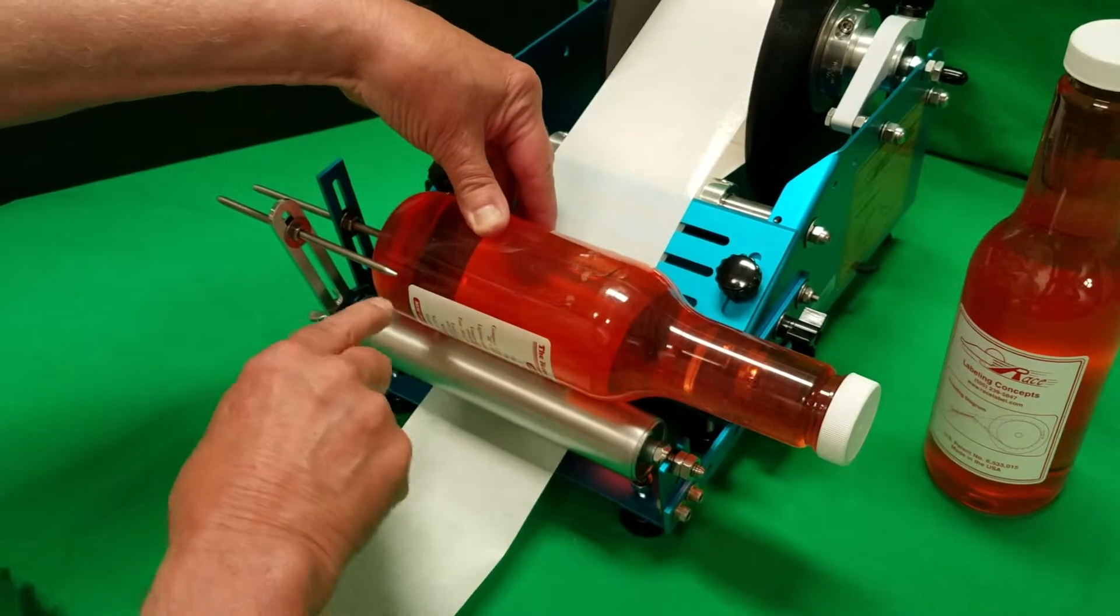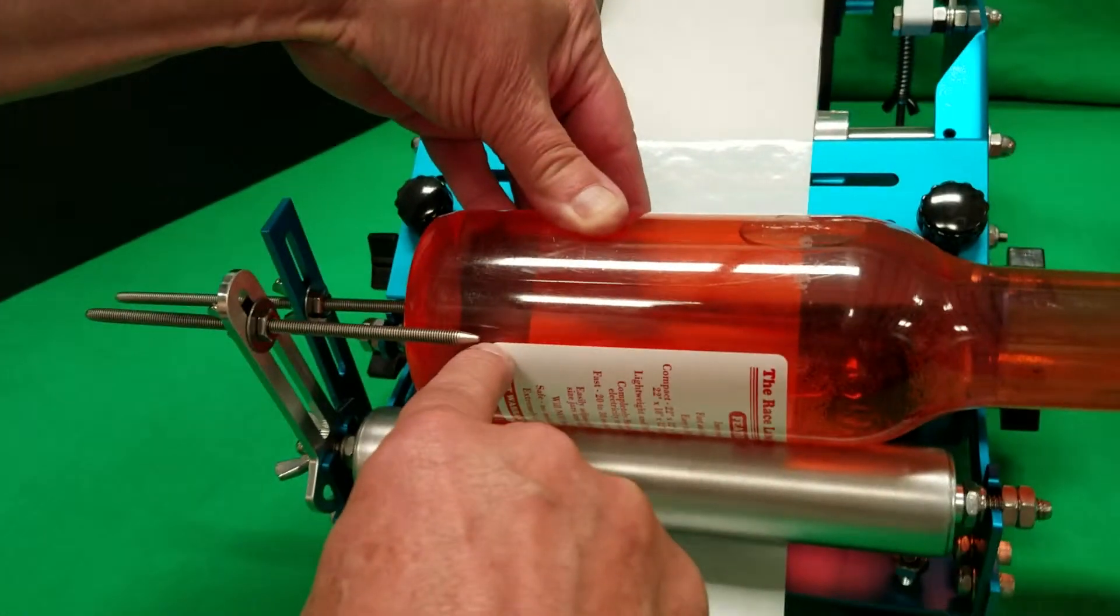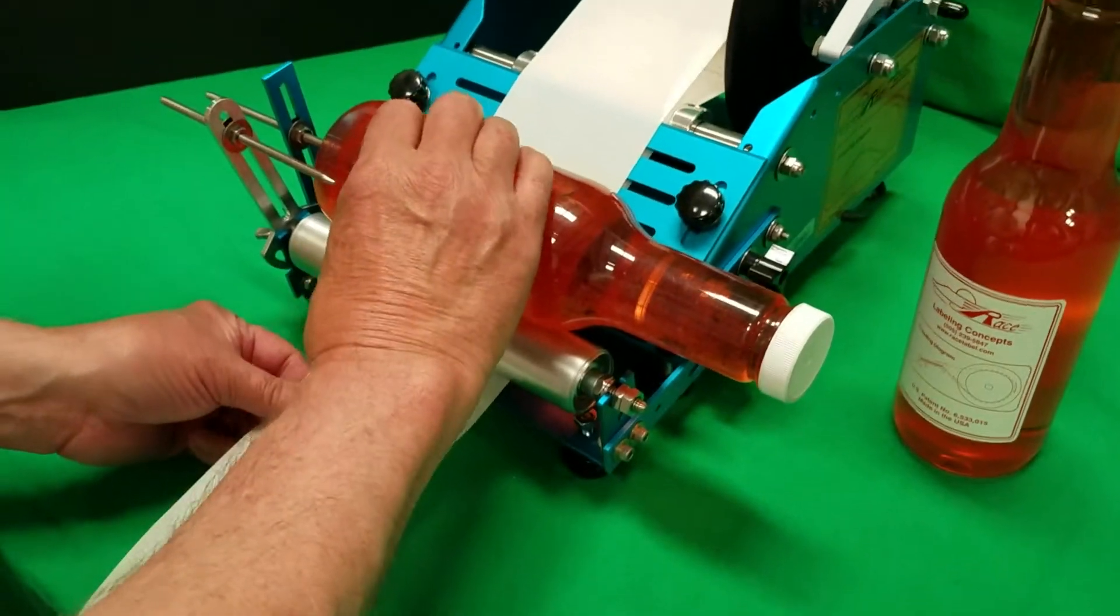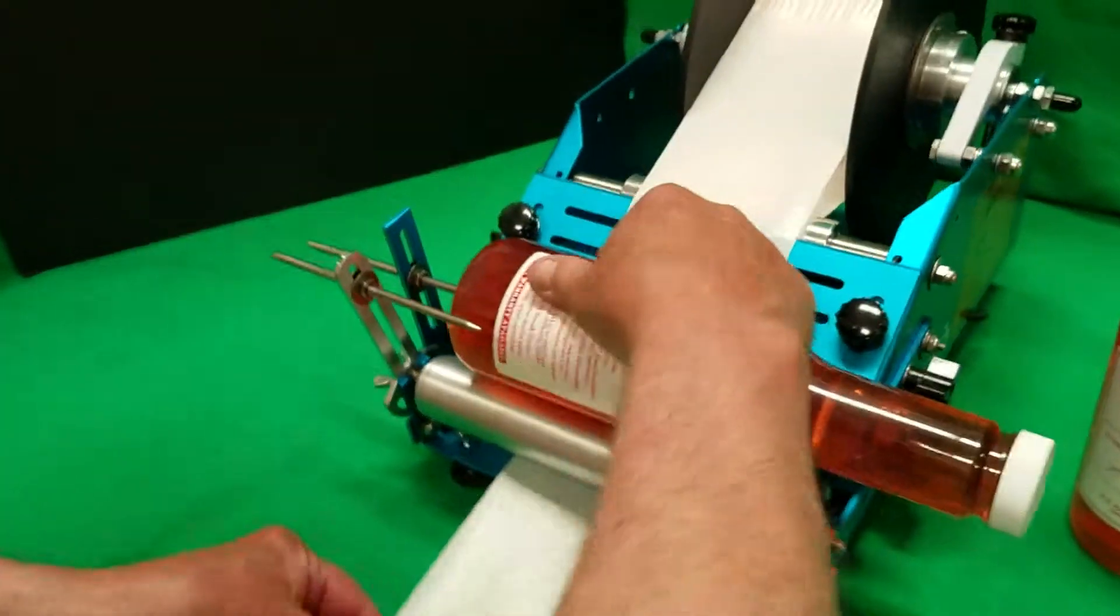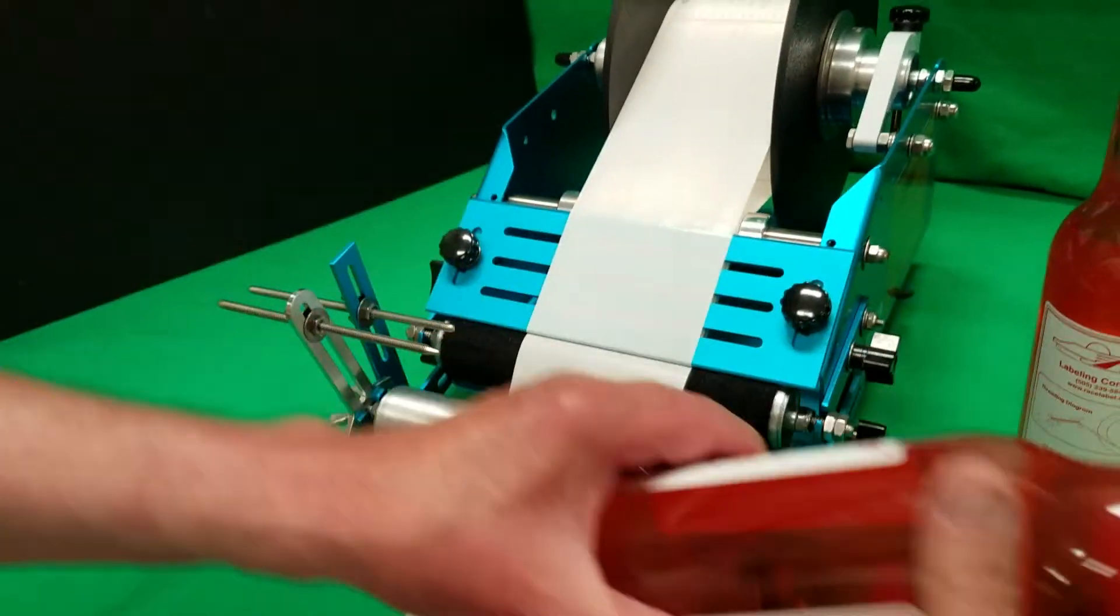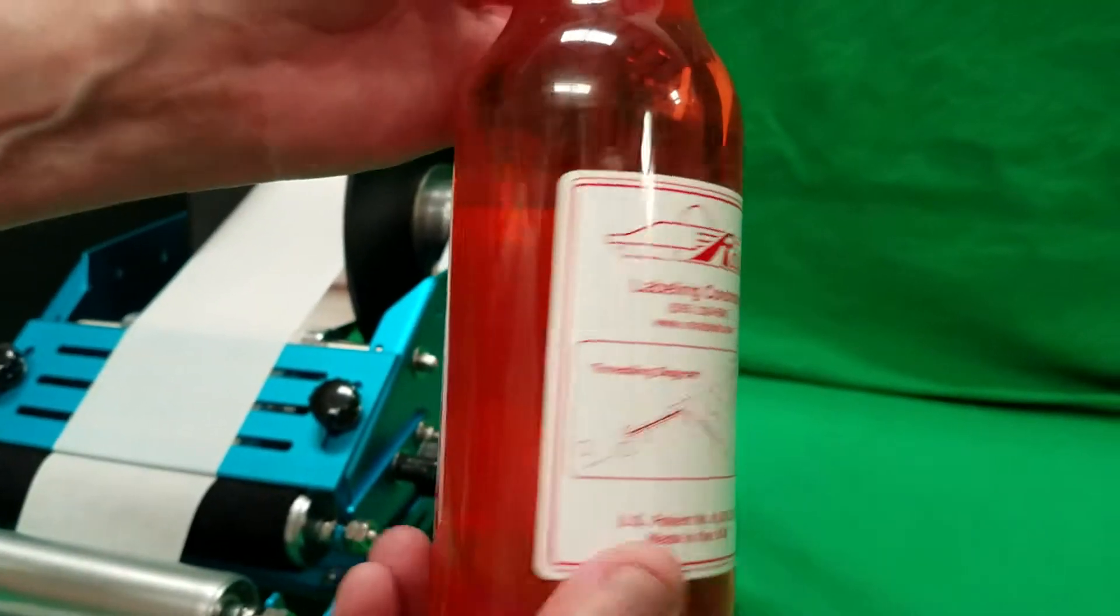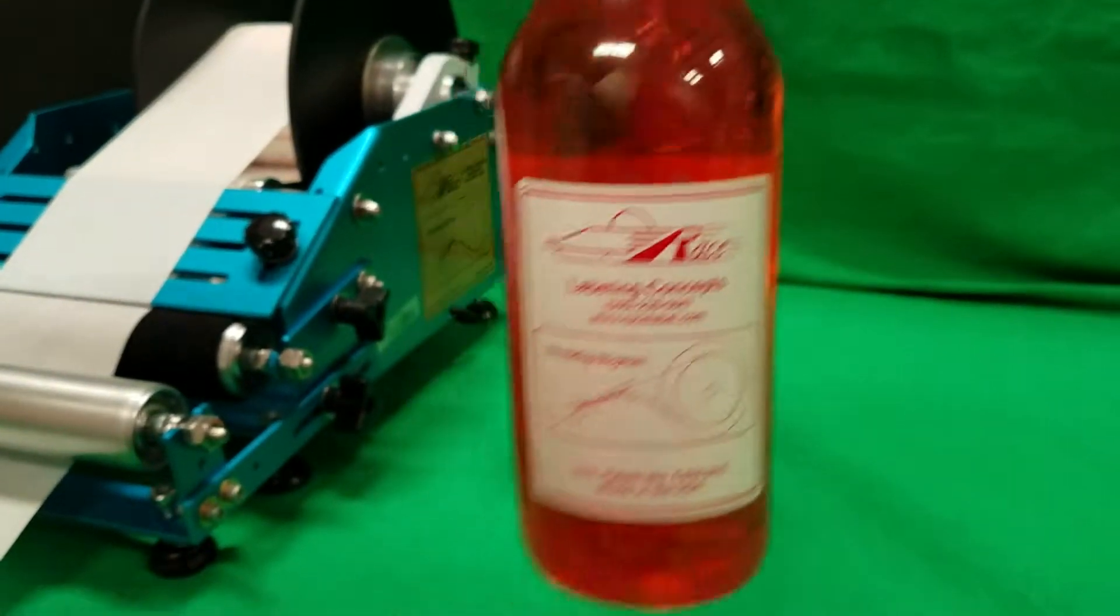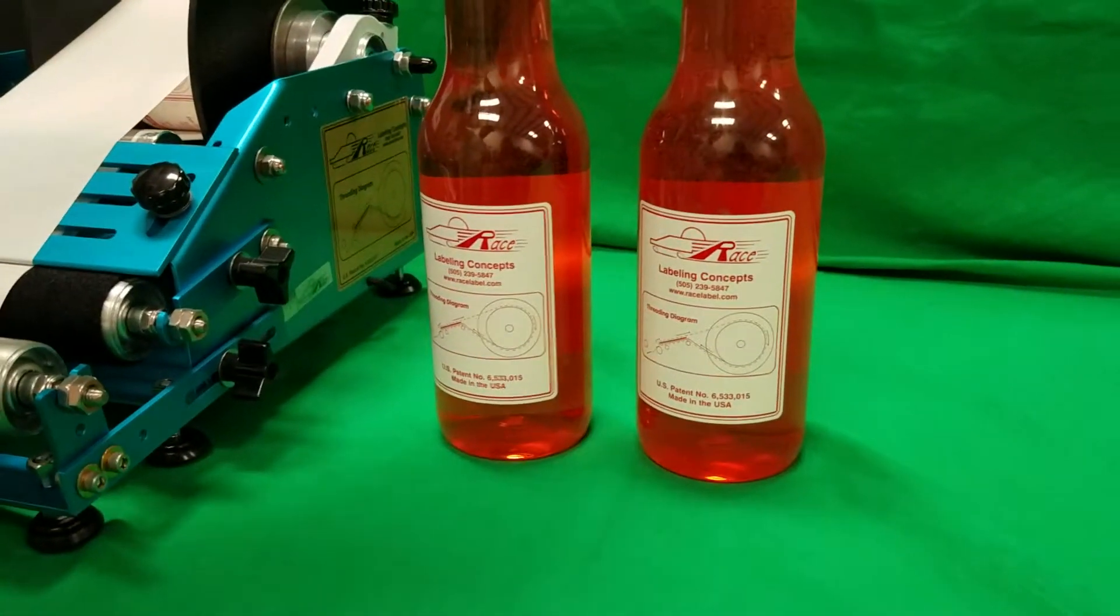The machine stops, we bring the leading edge of the already applied label up to the gap guide, and we apply the back label. And once again, you'll get that gap that is correct for the bottle. And it also allows you to stay off the seams of the bottle.